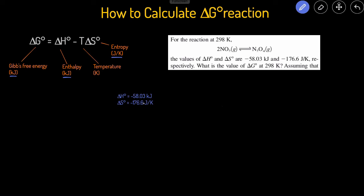We have the option of choosing kilojoules or joules, let's convert them both into kilojoules. So if we do that, all we have to do is divide this number by 1,000, and that'll give us negative 0.176 kilojoules per K.